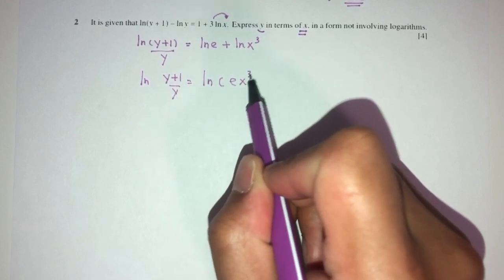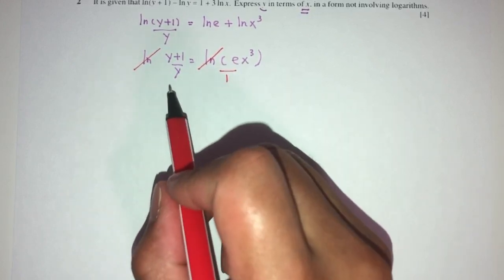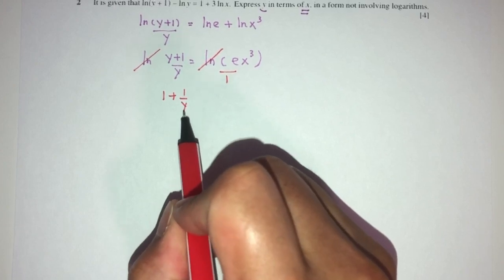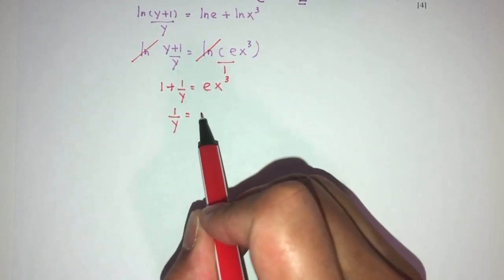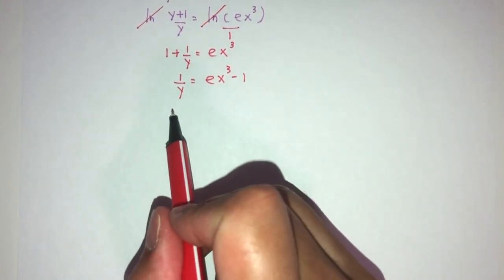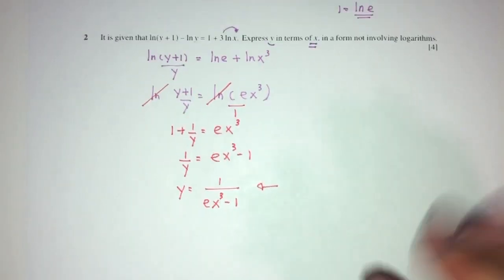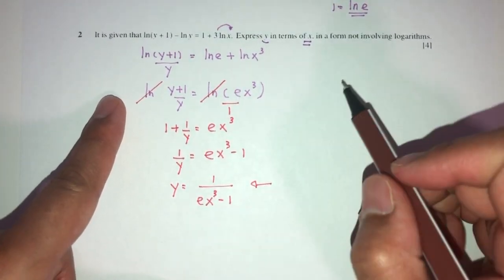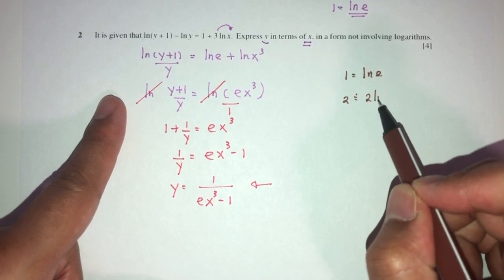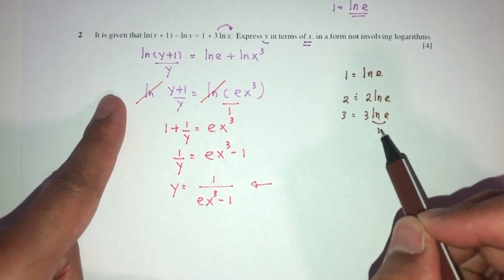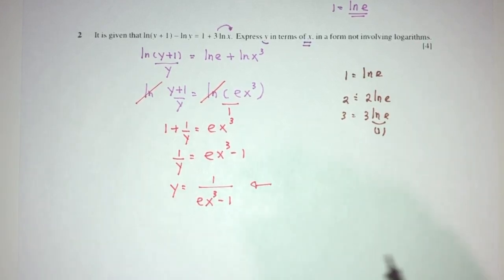Now cancel the ln on both sides. Then cross-multiply and divide by y. You will have 1 + 1/y = e·x³. Breaking this down: 1/y = ex³ − 1. So y = 1 / (ex³ − 1). The key thing to know here is that 1 = ln(e), so any constant — like 2 or 3 — can be written as 2·ln(e) or 3·ln(e). That's how we express constants within logarithmic expressions.